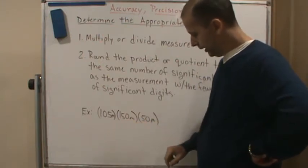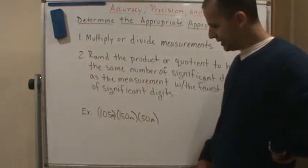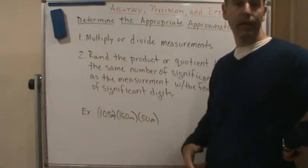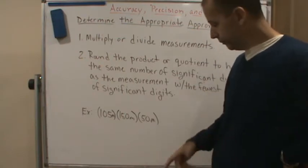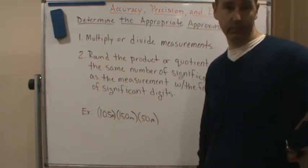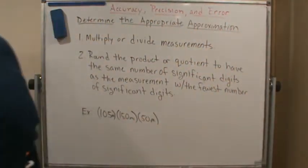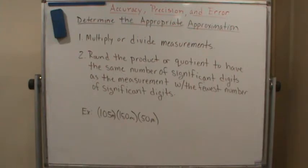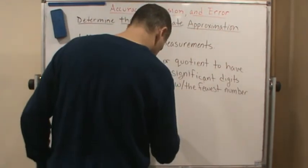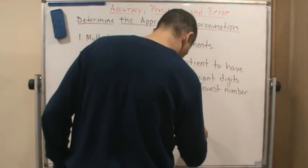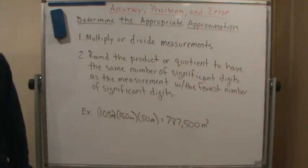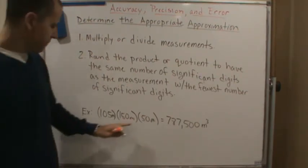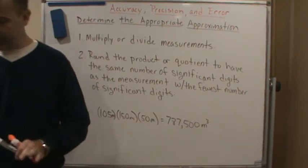Since the third measurement has only one significant digit, our answer is going to be rounded to one significant digit. If we multiply all three together in our calculator, we get 787,500 cubic meters — that's the volume.